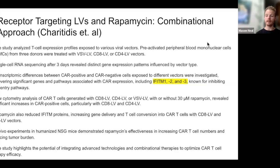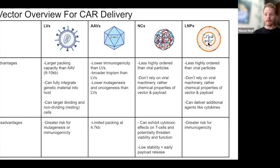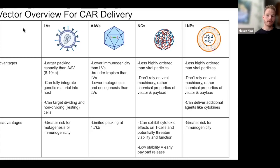They also performed experiments in humanized mice and noticed an increase in CAR-T cell numbers and reduced tumor burden overall within the treated mice. Here is a highlight of the different types of vectors used for in vivo CAR-T found in the literature: lentiviral vectors on the top left, compared with AAVs or adeno-associated viruses, and then two non-viral vectors on the right — nanocarriers and lipid nanoparticles.